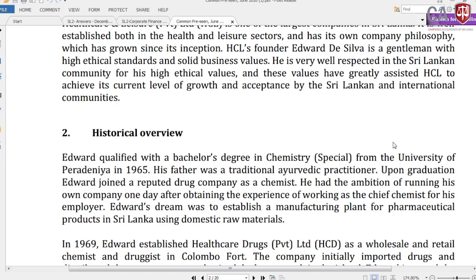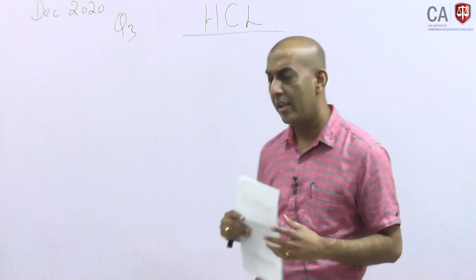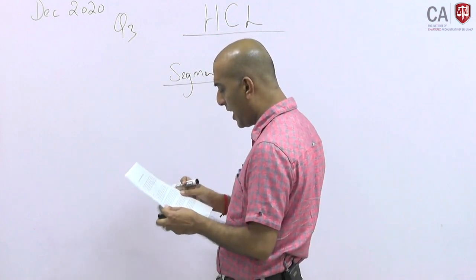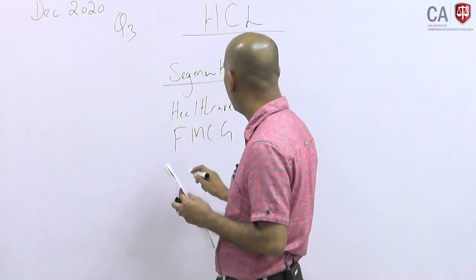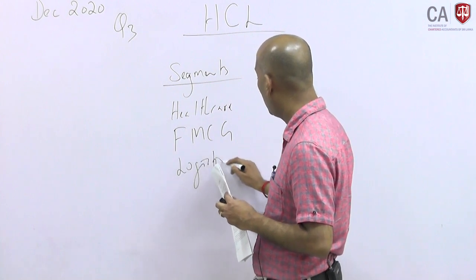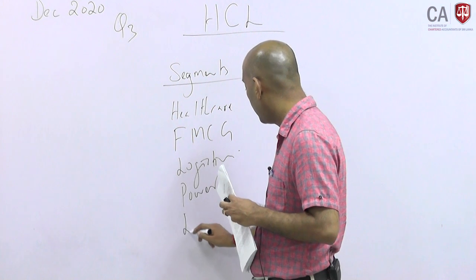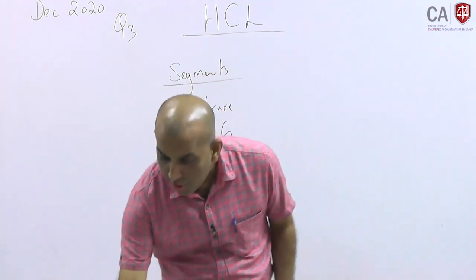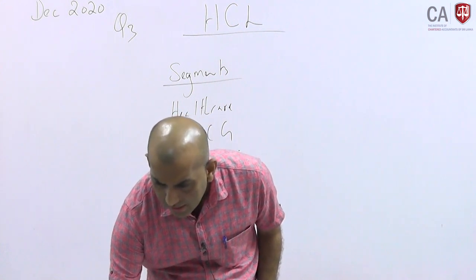This company has been in business a long time, is well respected, has good ethical values, and has five segments: healthcare, fast moving consumer goods (FMCG), logistics, power sector (wind power), and leisure. These are the five sectors the company is in. Going straight to the important area — the FMCG sector has a 25% market share, which shows they are very strong in that business environment.